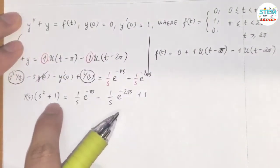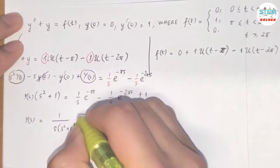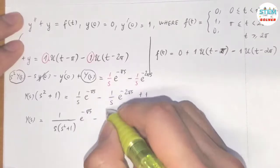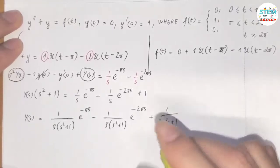Now divide both sides by s² + 1. So I have 1/(s(s² + 1))e^(-πs) - 1/(s(s² + 1))e^(-2πs) + 1/(s² + 1).